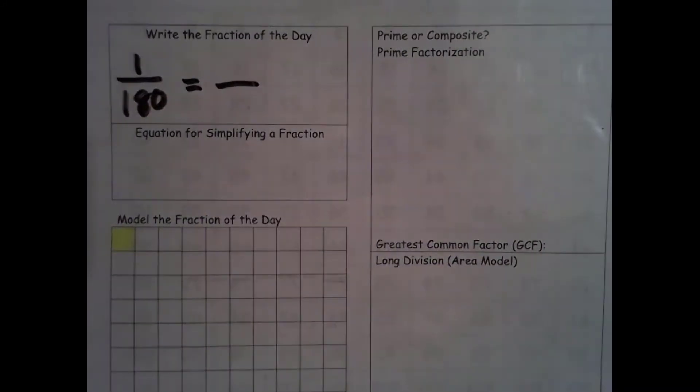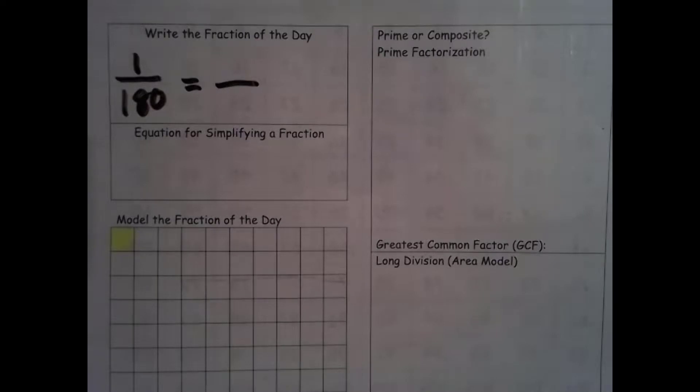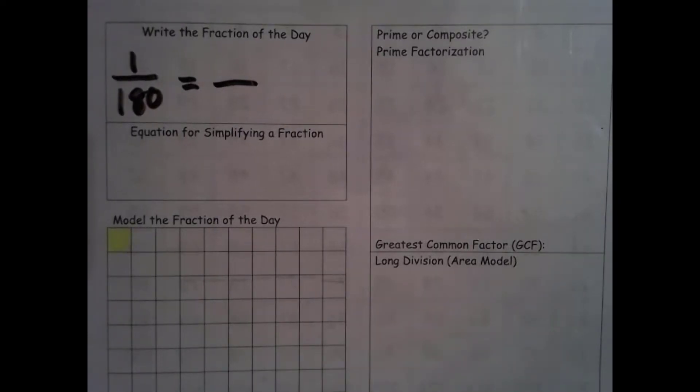So now we're looking at 1. Is it prime or composite? If you still have your prime number sieve you can look on that, or if you can remember, prime means it has exactly two factors. Composite means it has more than two factors.